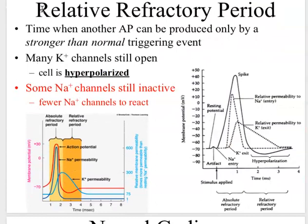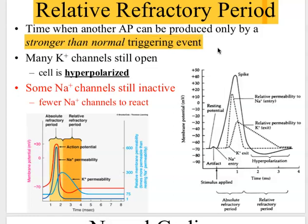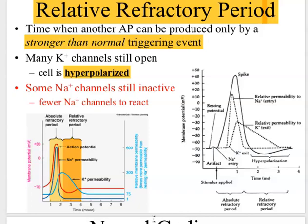In the relative refractory period, it is possible to fire another action potential, but it requires a stronger than normal stimulus. This is because the potassium channels are still open and the cell is hyperpolarized — in a hyperpolarized state the cell is more negative, making it harder to reach threshold. Normally resting at negative 70 millivolts, reaching threshold at negative 55 is straightforward, but when hyperpolarized at negative 90, the cell needs an extra 20 millivolts of depolarization.